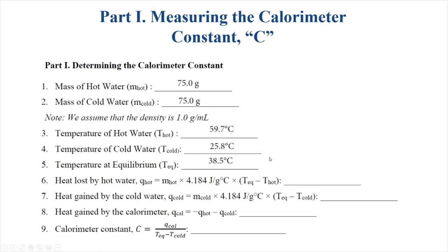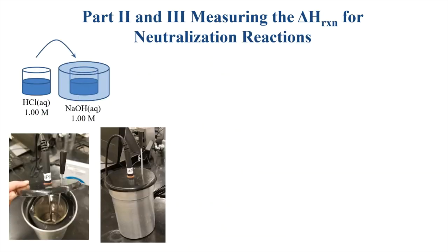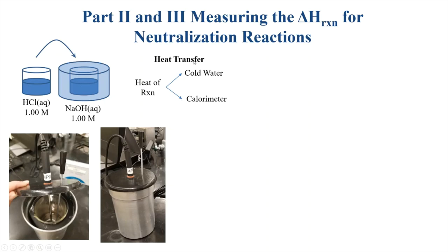In the second part of the experiment, we use our calorimeter to measure the delta H of reaction for neutralization reactions. We'll have an acid in a beaker and a base in a beaker, pour the acid into the base, and they'll react, transferring heat in two directions — to the cold water (the solution) and to the calorimeter. The cold water in this case is actually the solution — the combination of the HCl and NaOH aqueous solutions — that is our water sink.